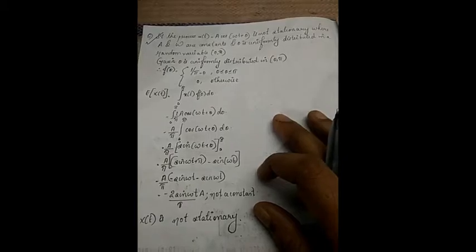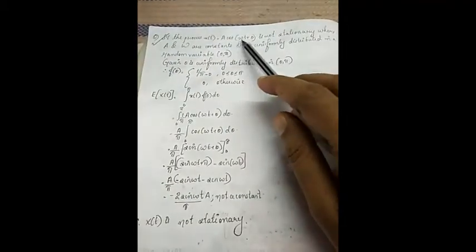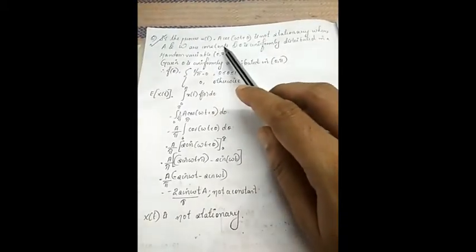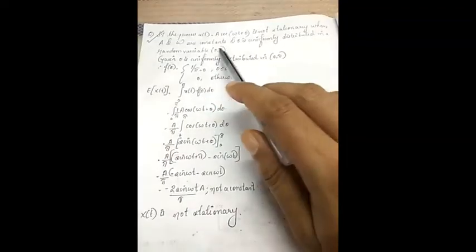Hello students, this is the next problem. Show that the process x(t) = a·cos(ωt + θ) is not stationary, where a and ω are constants and θ is uniformly distributed random variable.